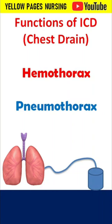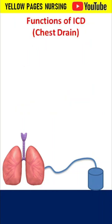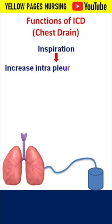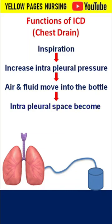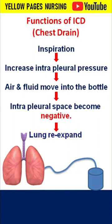How does the drain work? During inspiration, there is increased intrapleural pressure, with which air and fluid move into the bottle. This leads to the intrapleural space becoming negative, and thereby the lung re-expands.